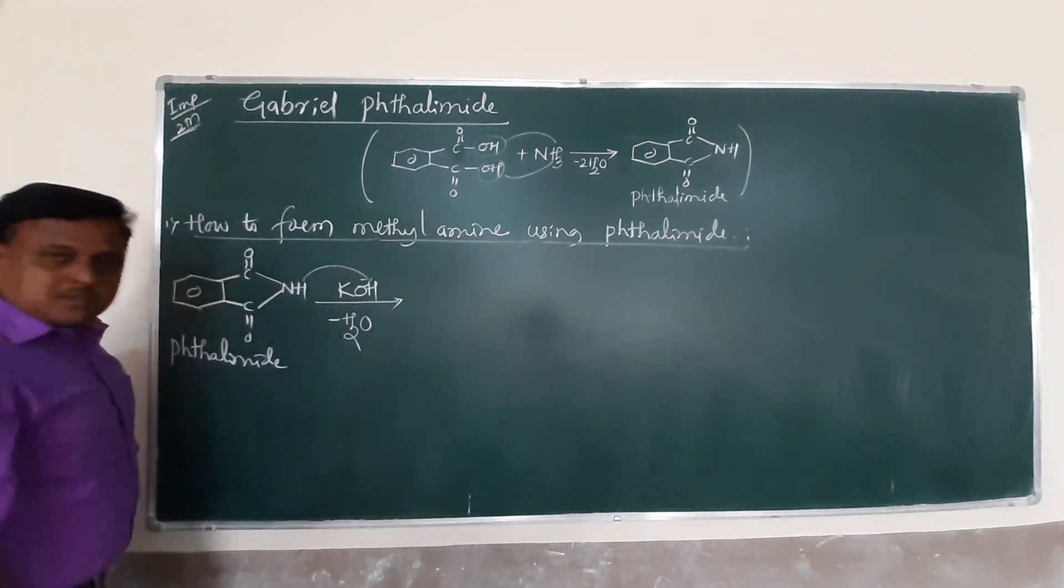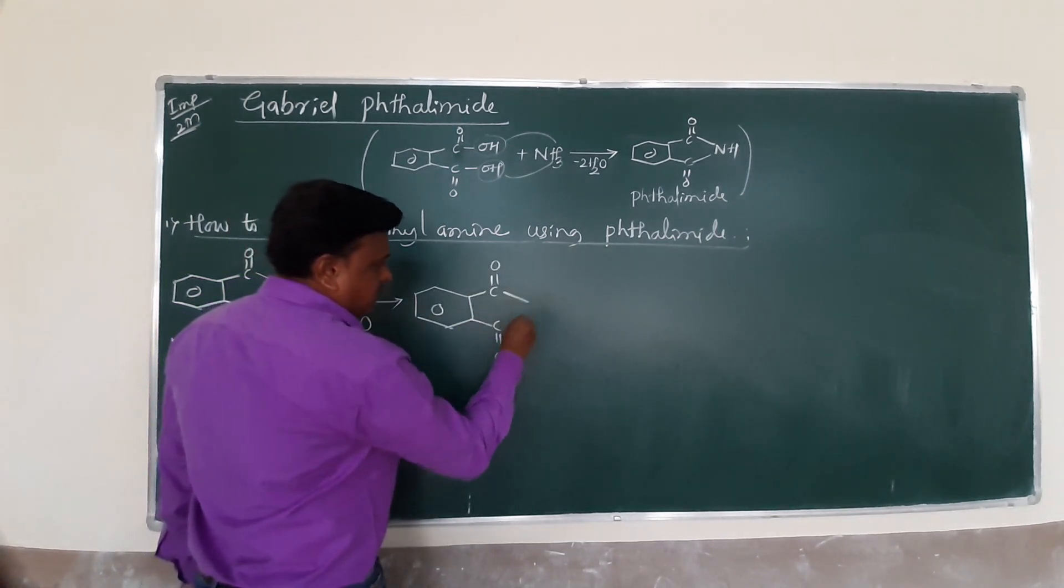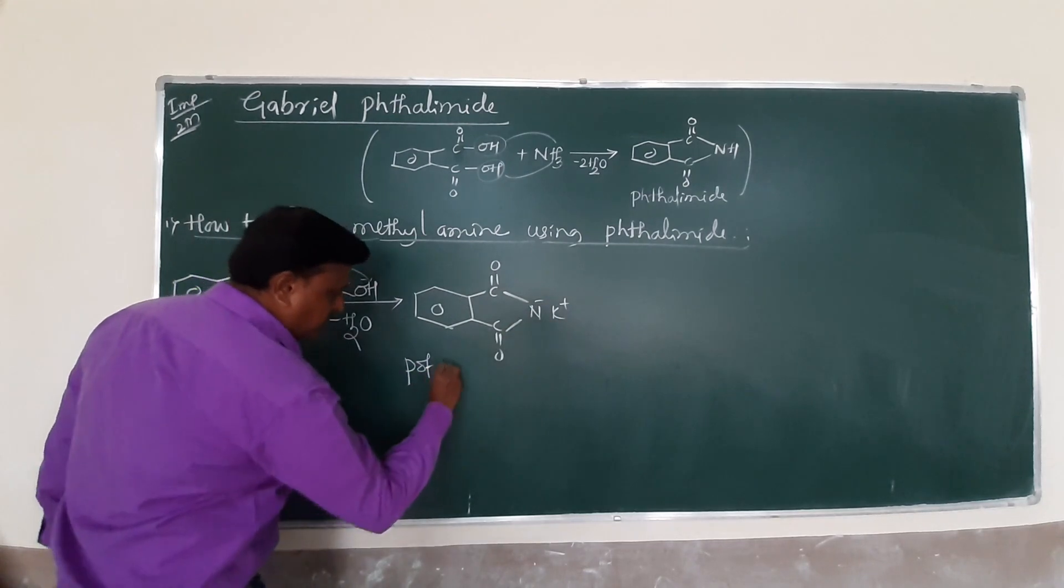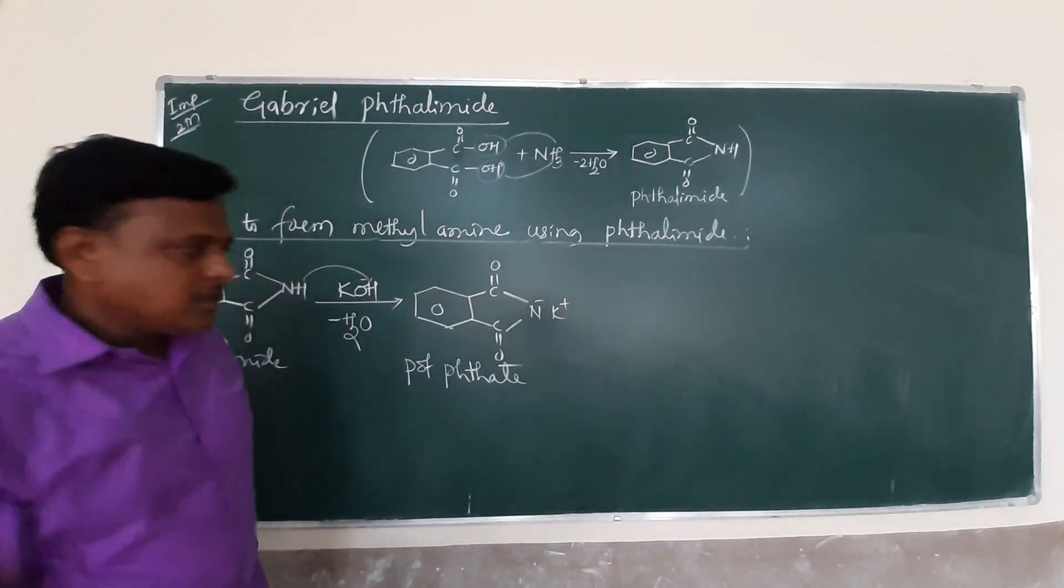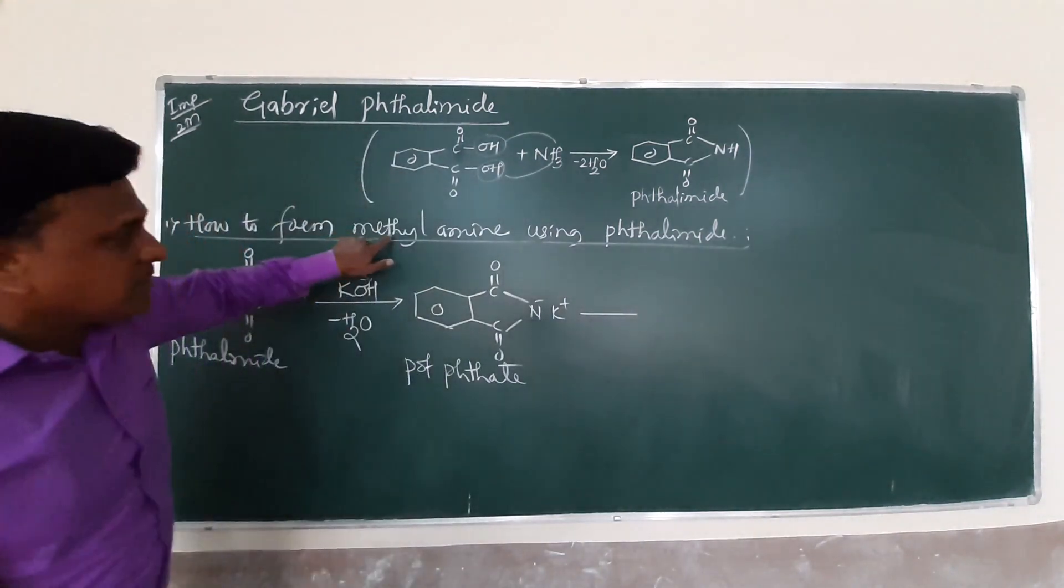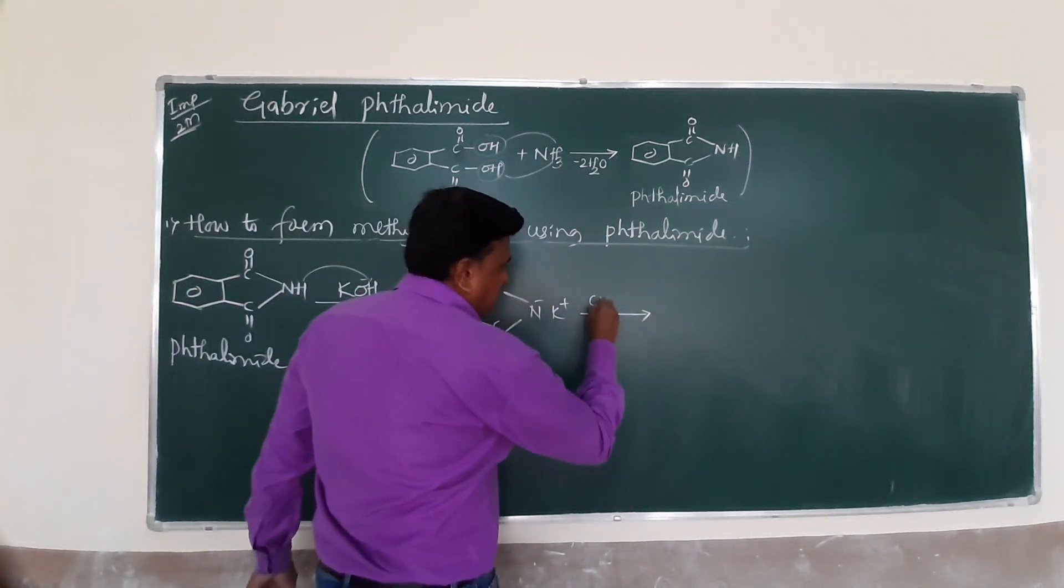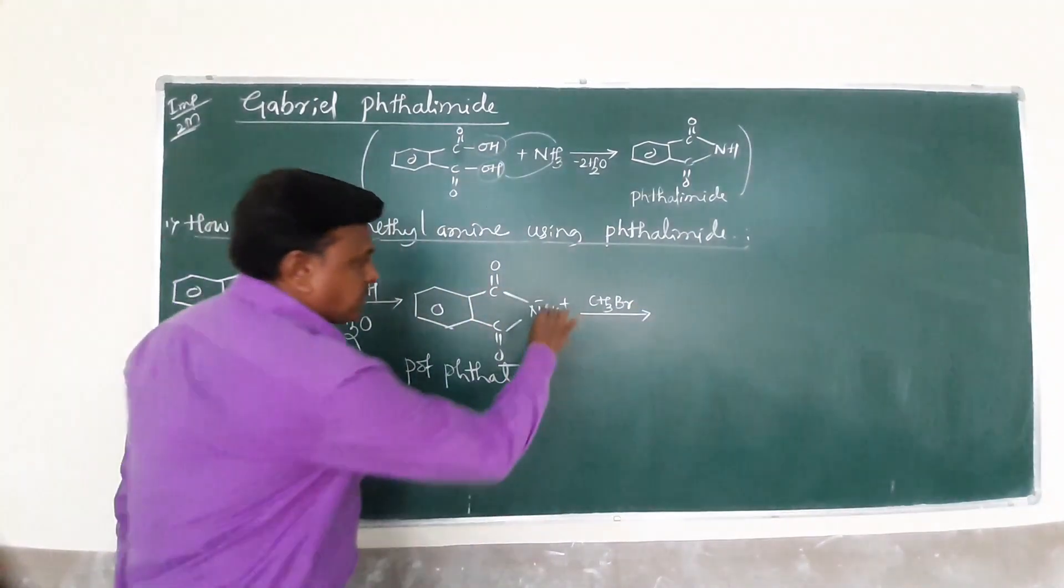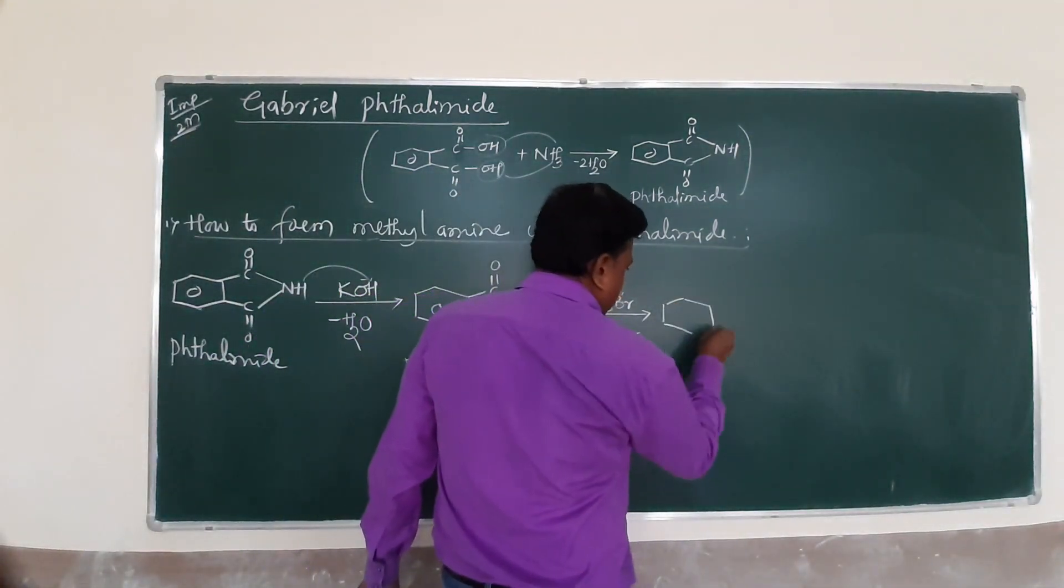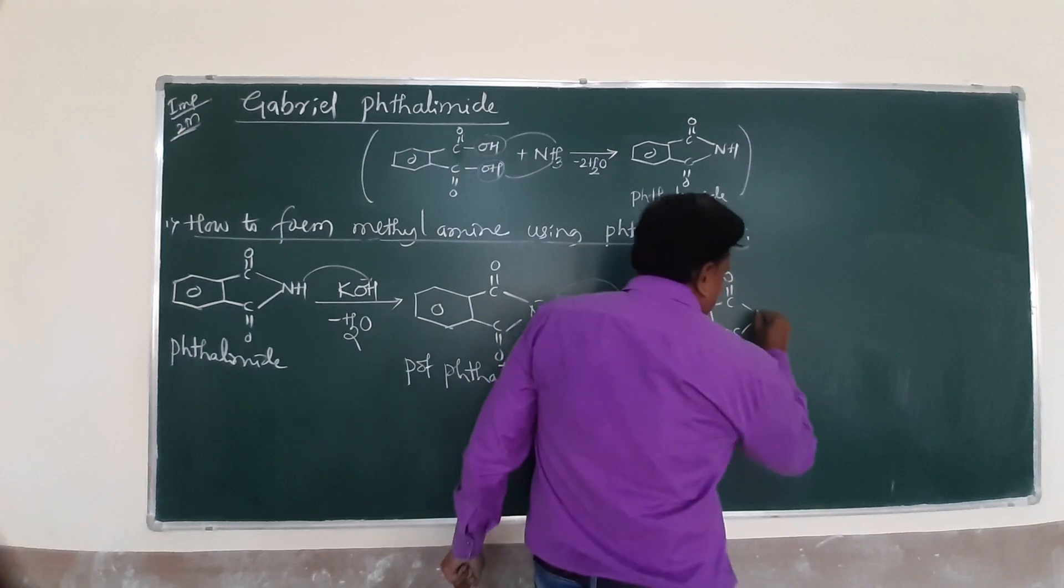Phthalimide is reacting with alkaline. When it reacts with alkaline, to remove water, now the salt is formed, this is N-K, this is potassium phthalimide. Now we can use CH3Br, methyl bromide. Methyl bromide with loss of potassium bromide KBr. Now this is your compound, CO, CO, N and CH3.